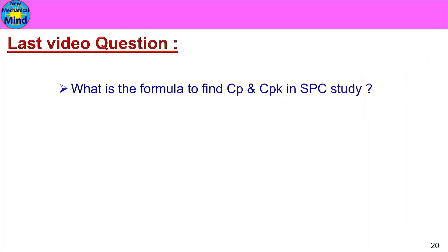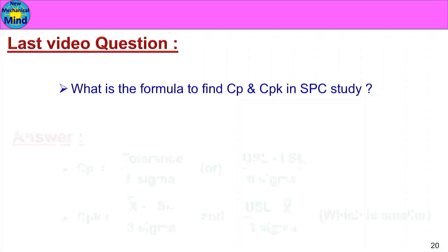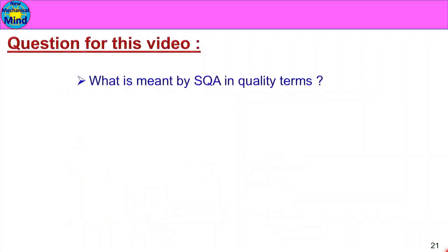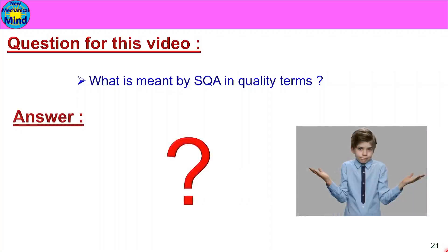In the SPC study, the CP and CPK formulas are: CP formula is Tolerance divided by Six Sigma, or USL minus LSL divided by Six Sigma. CPK formula is the minimum of (X-double-bar minus LSL divided by Three Sigma) and (USL minus X-double-bar divided by Three Sigma). This is the right answer. In this video, the next question is: What is meant by SQA in quality terms? If you have a good answer, please write it in the comment box. Thank you.